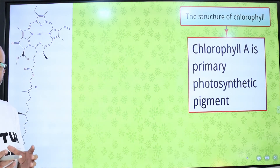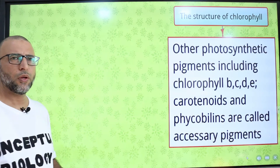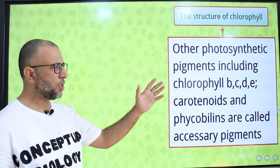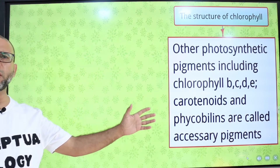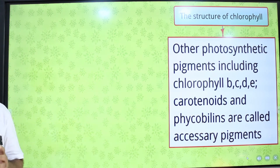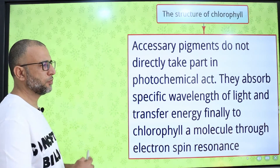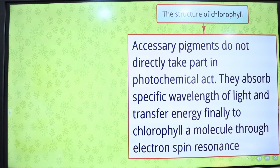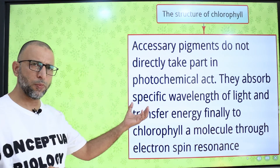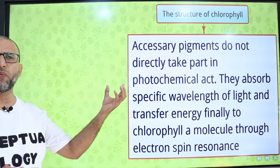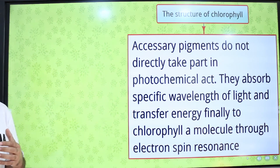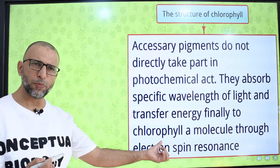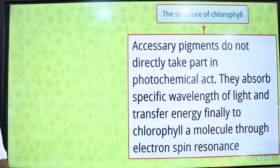Chlorophyll A is the primary photosynthetic pigment. Other photosynthetic pigments — such as chlorophyll B, C, D, E, phycobilins, and carotenoids — are called accessory pigments. Accessory pigments do not directly take part in the photochemical reaction, but they absorb specific wavelengths of light and transfer energy to the reaction centre, where the chlorophyll A molecule is present, through electron spin resonance.